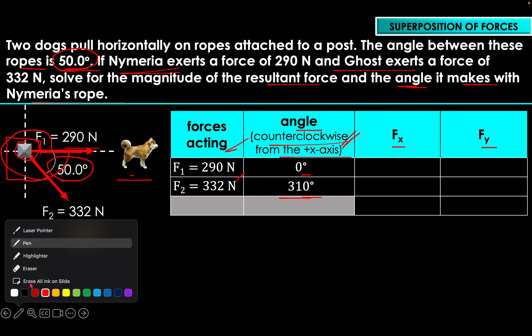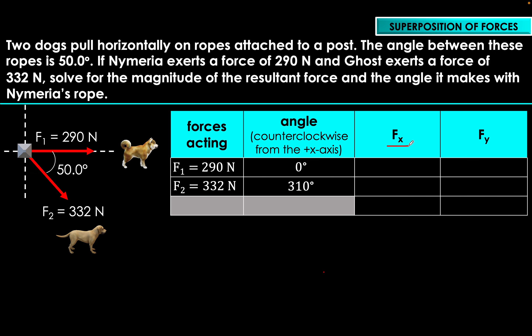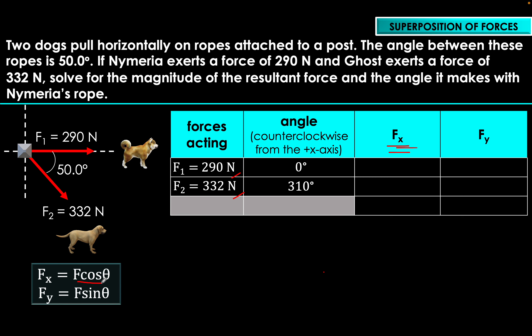Now we solve for Fx. The x-component of a force is calculated using the formula Fx = F cosine θ, where θ must be the angle measured with respect to the x-axis. We can plug in our values directly since both angles are already measured with respect to the positive x-axis.